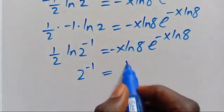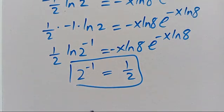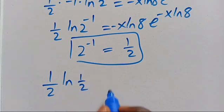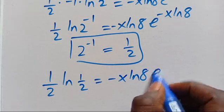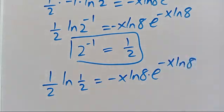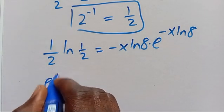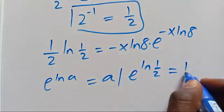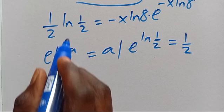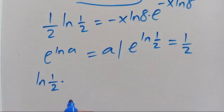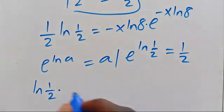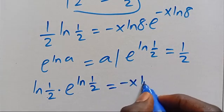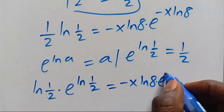Since 2 to the power of minus 1 equals 1 divided by 2, from here we have 1 over 2 times ln(1/2) equals minus x times ln(8) times e to the power of minus x times ln(8). Recall from the relationship that e to the power of ln(a) equals a. Applying it: e to the power of ln(1/2) equals 1/2, so we write ln(1/2) times e to the power of ln(1/2).